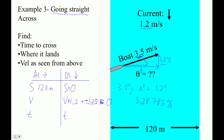I'm going to store that in my calculator. So the across velocity is 3.285 meters per second. Now we can find the time it takes to cross by dividing 120 by that answer. I get 36.497 seconds. We can note that the displacement downstream is zero, so there's not really any point in computing it further. The time to cross is 36 seconds.